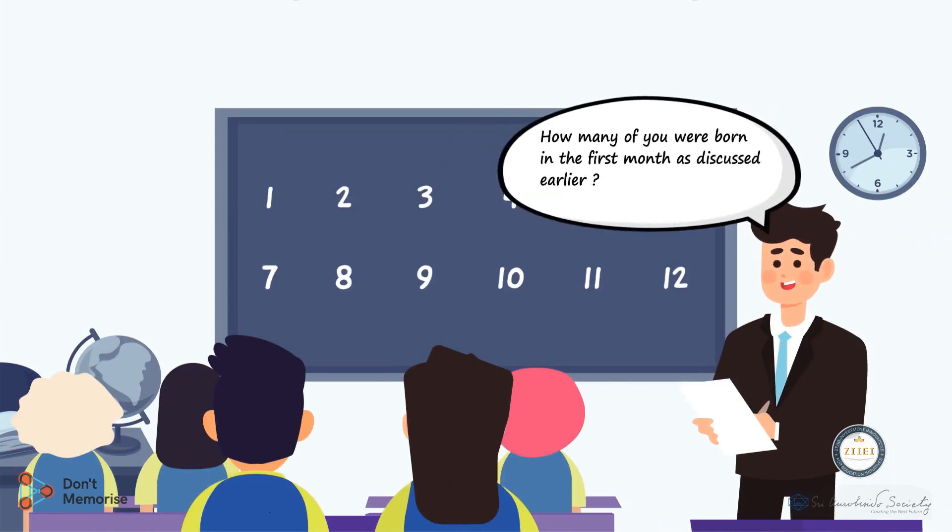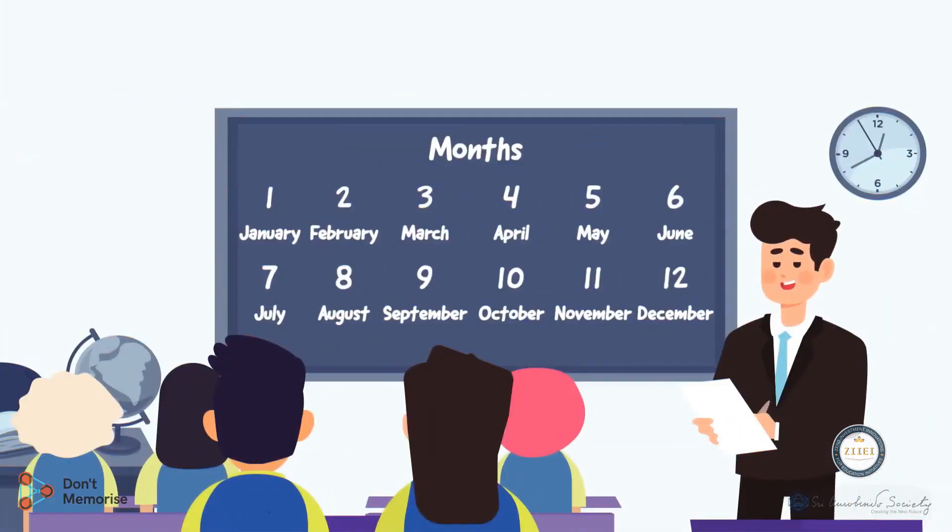Write the numbers 1 to 12 in a sequence on the board. Ask the students how many of you were born in the first month, and what is the name of the first month? The students will say that the first month is January. Help the students to know the name of the month and help them in pronouncing it correctly.